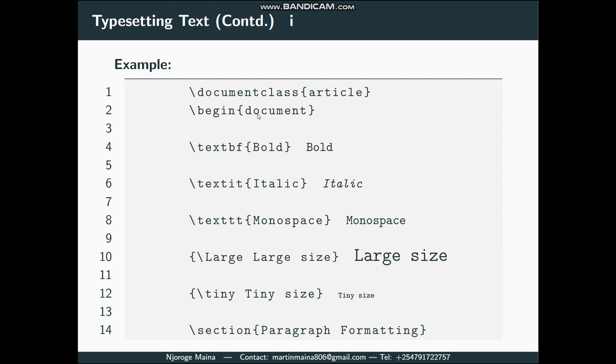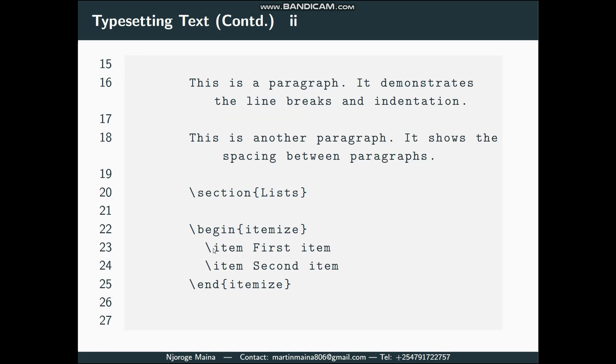We talked about the document environment where everything that goes in will be printed to the document. In line four we specified bold - textbf is for text bold font, textit for text italic, and texttt for text monospace or typewriter text. Then for large size you can use an opening curly brace, backslash large. We have large with capital L, large with small l - they have different sizes. Then you have tiny.